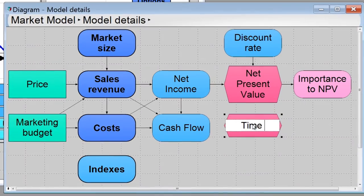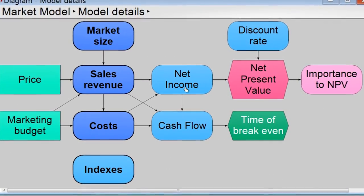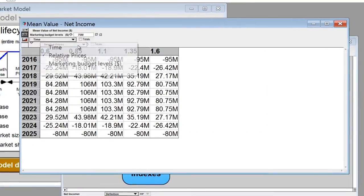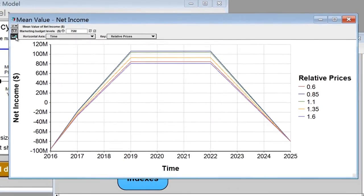You build models simply by drawing intuitive influence diagrams. You can explore multi-dimensional arrays with ease. You can treat anything uncertain as a probability distribution.